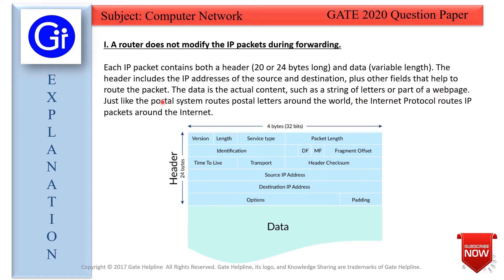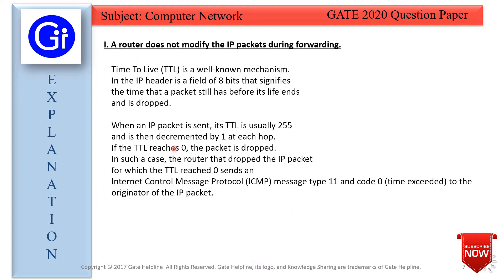The data is the actual content such as a string of letters or part of a web page. Just like the postal system routes postal letters around the world, the internet protocol routes IP packets around the internet. The field in the IP packet we need to notice is Time to Live (TTL), so now we will explain what TTL exactly is.